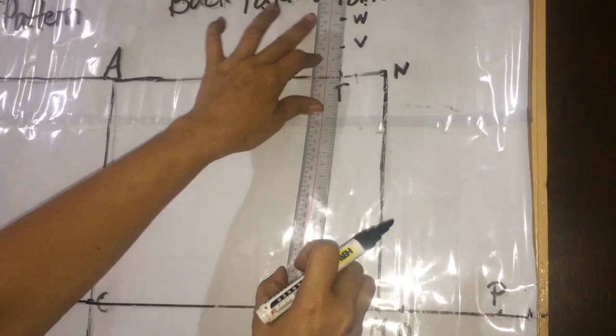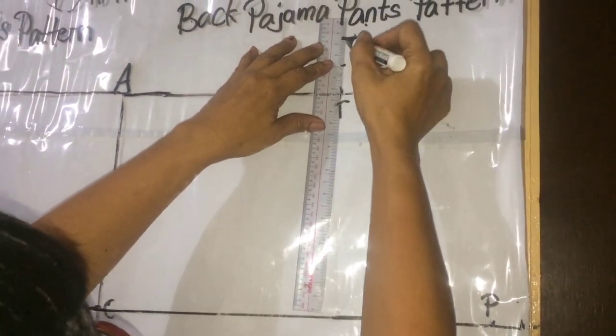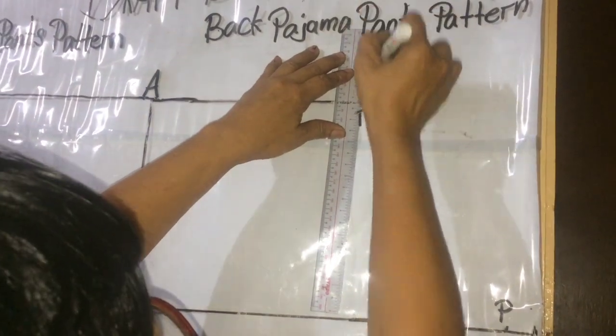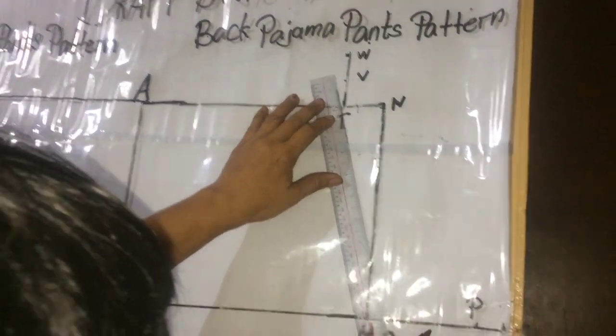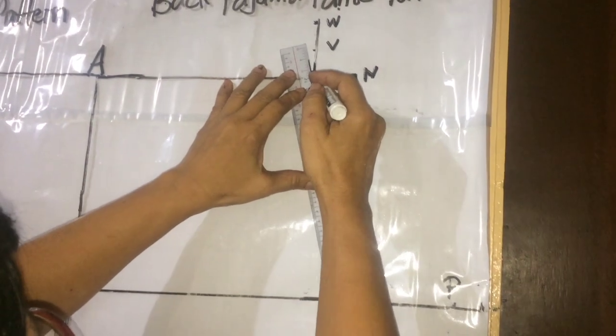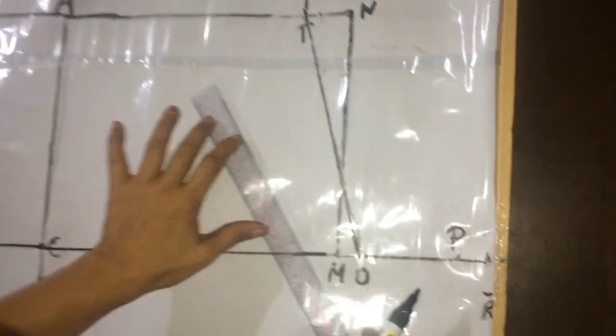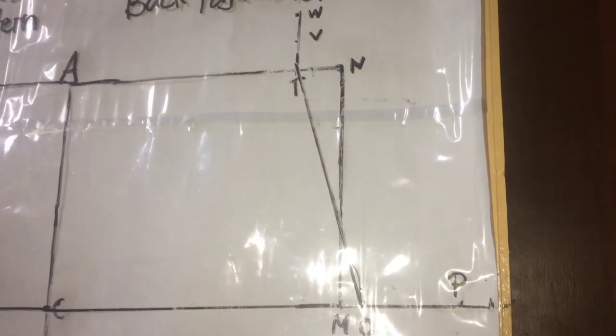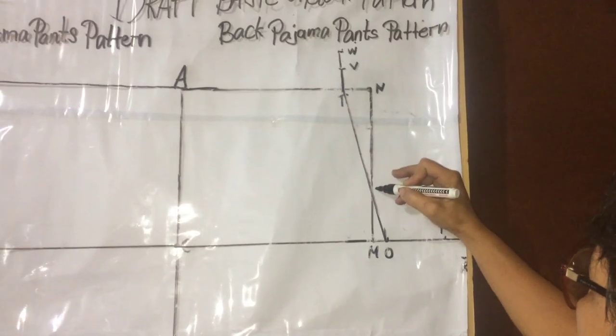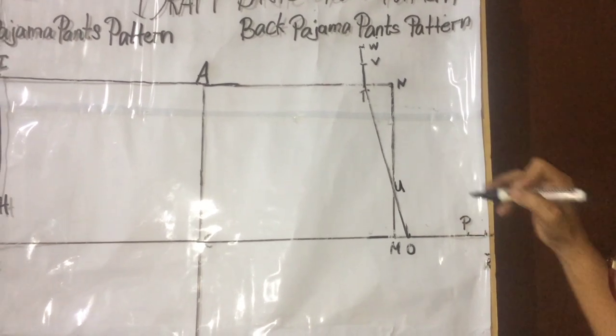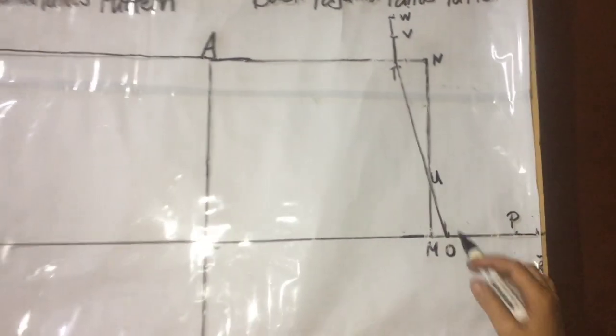Mark R. Extend W, V, and T using a ruler up to line O. U is the intersection of line M. Connect U to R using a French curve.